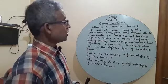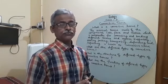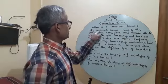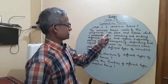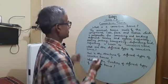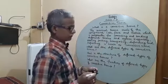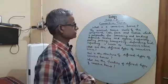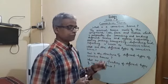So if we are asked what is a connective tissue, we should define it as the animal tissue made of the components: cells, fiber, and matrix, which is responsible for connecting and binding different tissues and organs, supporting, storing, and packing.